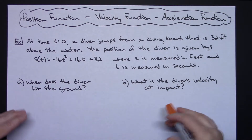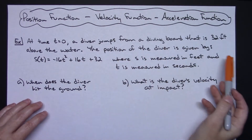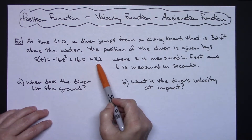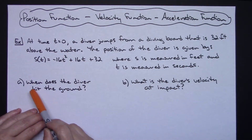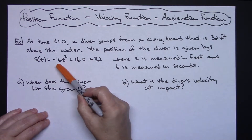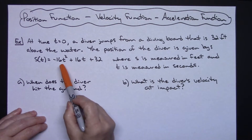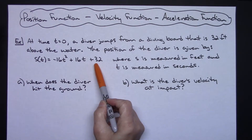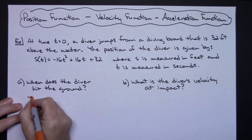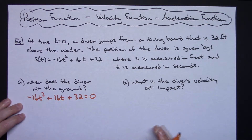Just because you're in calculus class doesn't mean every problem has to use calculus. We've got somebody 32 feet above the ground, and this function gives their position. As they jump off the diving board at time t equals zero, the question asks when does the diver hit the ground. This has absolutely nothing to do with calculus — I just need to know when this equation equals zero. So I set negative 16t squared plus 16t plus 32 equal to zero and solve for t.